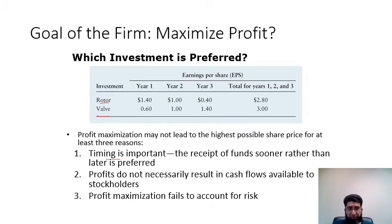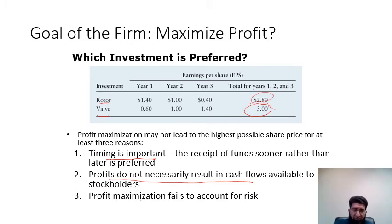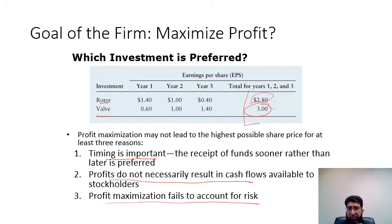Profit maximization fails to maximize share price for at least three reasons. First, timing matters — receiving funds sooner is preferred because more uncertainty is associated with later years. Second, profits do not necessarily result in cash flows — if earnings are accrued but not received, $2.80 received is better than $3.00 not yet received. Third, profit maximization fails to account for risk, since uncertainty in later years is higher and the figures alone don't give a fair view of risk.